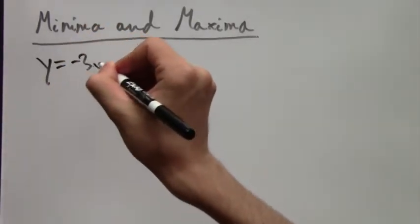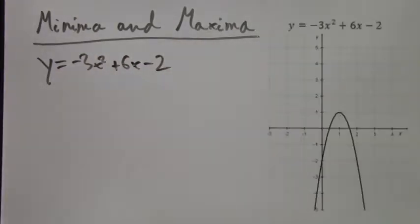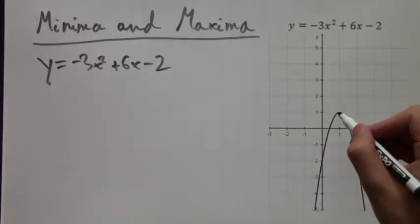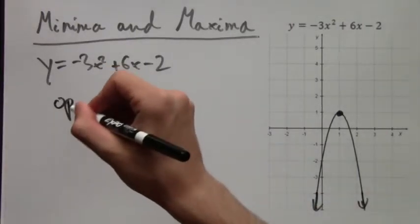Let's say we have the function y equals negative 3x squared plus 6x minus 2. Here is its graph. This is going to be the maximum, the point that I'm marking. And because it's a maximum, it's because the parabola opens down.